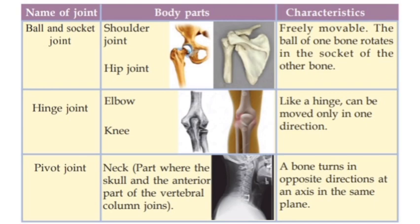Ball and socket joint — this is the shoulder joint or hip joint. The ball of one bone rotates in the socket of the other bone, allowing movement in all directions.